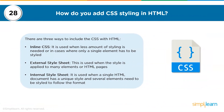The twenty-eighth question: how do you add CSS styling in HTML? There are three ways: inline CSS, external stylesheet, and internal stylesheet. Inline CSS is used when less styling is needed or only a single element needs to be styled — add the style attribute in the relevant tag. An external stylesheet is used when the style is applied to many elements or HTML pages — each page must link to the stylesheet using the link tag. An internal stylesheet is used when a single HTML document has a unique style — it is added in the head section of the HTML page using the style tag.